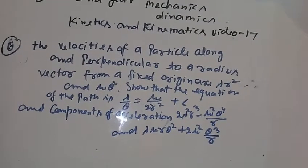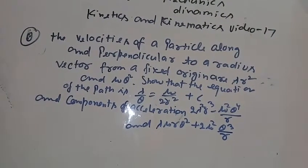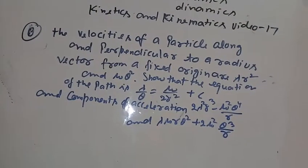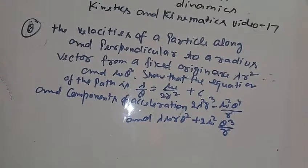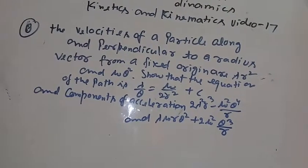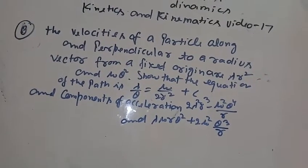And the components of acceleration are 2 lambda squared r cubed minus mu squared theta cubed upon r, and lambda mu r theta squared plus 2 mu squared theta cubed upon r. These are the components of acceleration. We need to find the equation of the path.